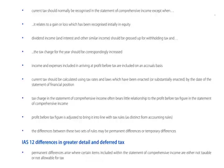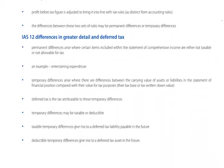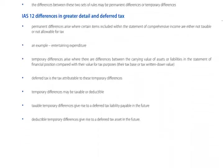Getting back to the bullet points: the differences between these two sets of rules may be permanent differences or they may be temporary differences. Permanent differences arise where certain items are included within the income statement and they're either not taxable or not allowable for tax — an example would be entertaining expenditure, certainly in the UK. Temporary differences arise where there are differences between the carrying value of assets or liabilities in the Statement of Financial Position compared to their value for tax purposes — their tax base or tax written down value. Deferred tax is the tax attributable to these temporary differences.